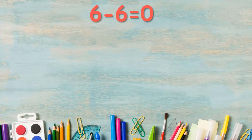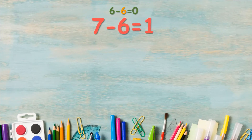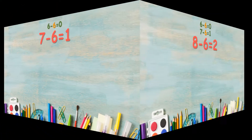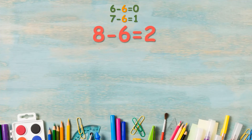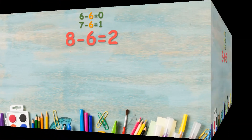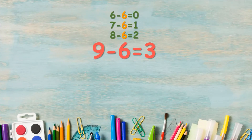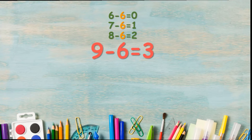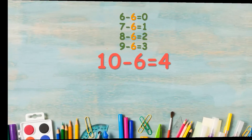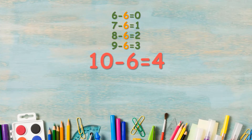Now let us repeat. 6 minus 6 is equal to 0. 7 minus 6 is equal to 1. 8 minus 6 is equal to 2. 9 minus 6 is equal to 3. 10 minus 6 is equal to 4.